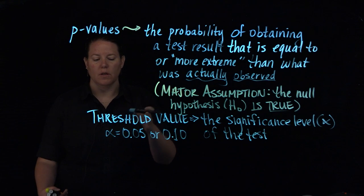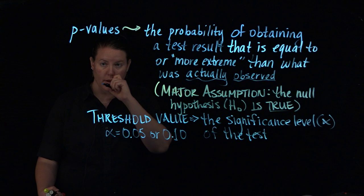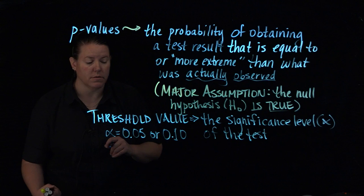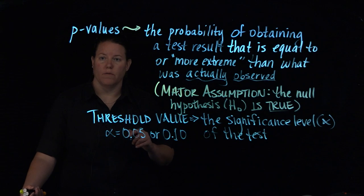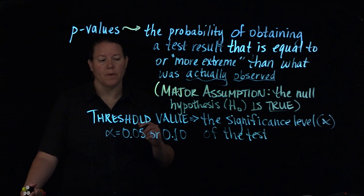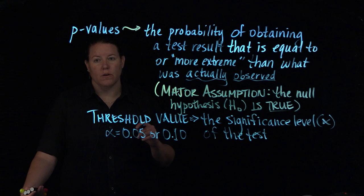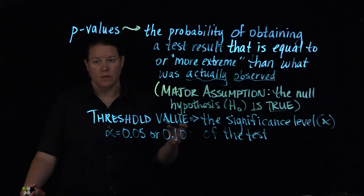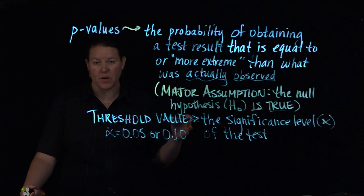and this is relating back to this idea of confidence intervals. 0.05 is essentially a 95% confidence interval. The 0.1 is a 90% confidence interval.